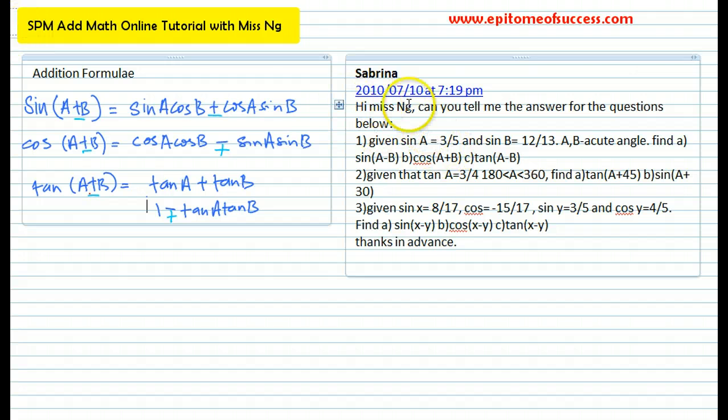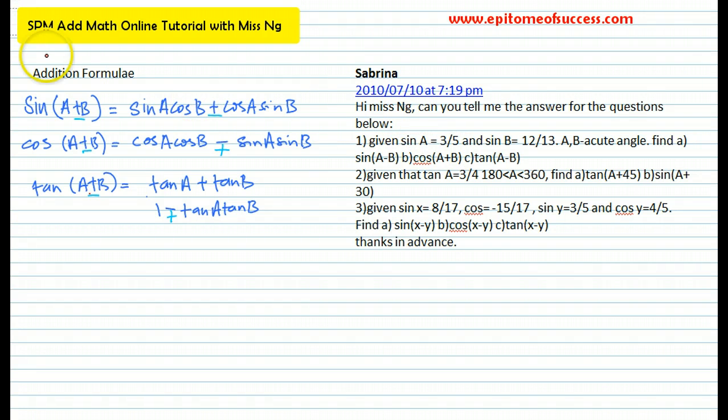It's a question on trigonometry, so let's look at it. She says, hi Ms. Ng, can you tell me the answer for the questions below? Given sine A is 3 over 5 and sine B is 12 over 13, A and B are acute angles. Find sine A minus B and cos A plus B and tangent A minus B.